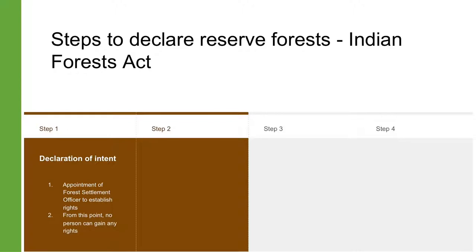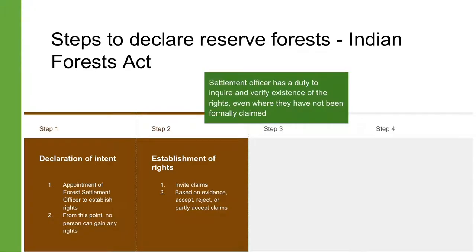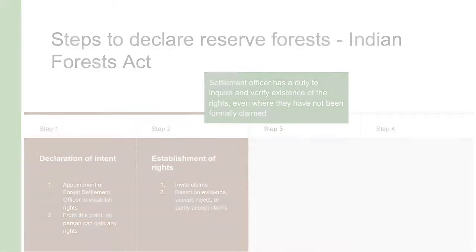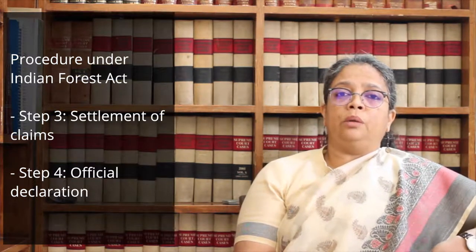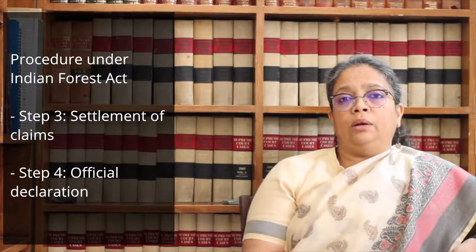The government has to announce its intention to declare an area as a reserve forest and then appoint a forest settlement officer to establish the rights of people over that area. From that point, except for some circumstances, no person can gain any rights over that area. The forest settlement officer will invite claims of rights from the public and then, based on information available in government records or the evidence of people familiar with that subject, accept, reject or partly accept and partly reject such claims. Even where rights have not been formally claimed, the settlement officer has a duty to independently inquire into and verify the existence of the rights of people over such an area.